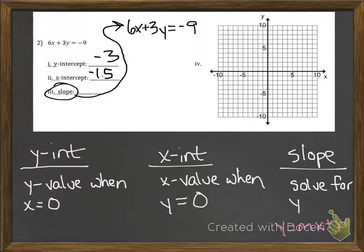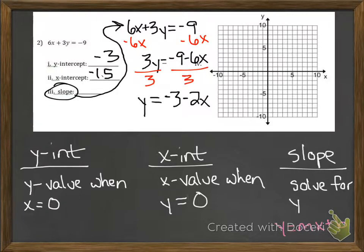Finally for the slope, we're going to rewrite our rule and solve for y. We'll subtract 6x from both sides and then divide both sides by 3. When you do negative 9 divided by 3, it gives you negative 3. Negative 6 divided by 3 gives you negative 2, and so now we have it written in slope-intercept form. The coefficient of x gives us what our slope is supposed to be. In this case, the number that's in front of the x is negative 2.